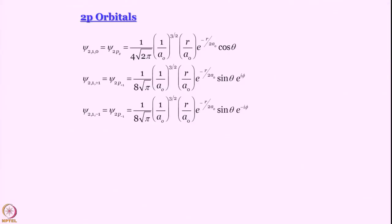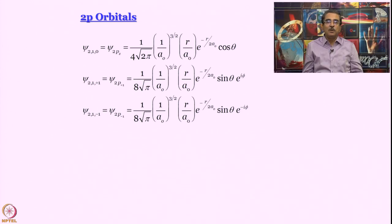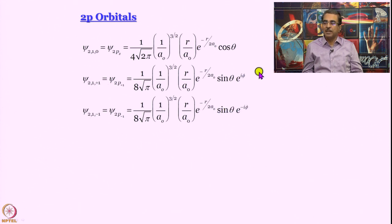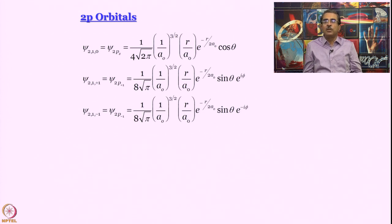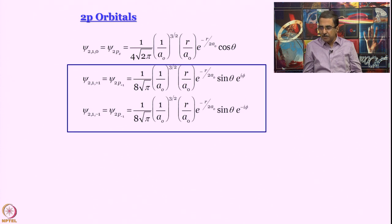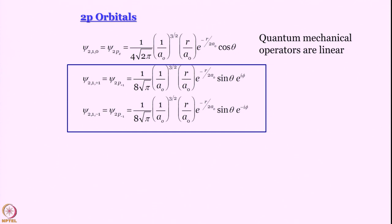Now we come to an interesting situation. The 2pz is easy to plot, but what about m = +1 and m = −1? For m = 0 the phi part is 1, so it is a real orbital. However, for m = ±1 the orbitals are imaginary, and we cannot draw them in real space. In chemistry, we like to plot things, so what we do is remember that quantum mechanical operators are linear.